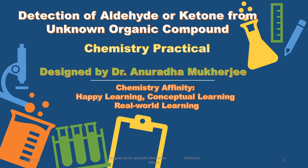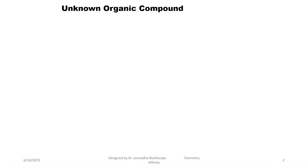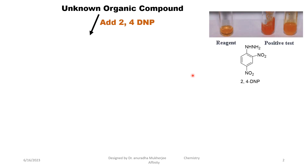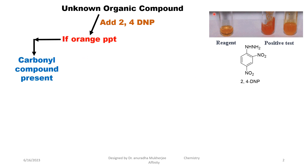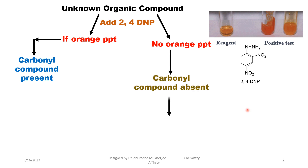Detection of aldehyde or ketone from an unknown organic compound in chemistry practical. First, dissolve the unknown organic compound in a suitable solvent, then add 2,4-DNP. If you are getting an orange precipitate, then it is a carbonyl compound. But if you are not getting any orange precipitate, that means the unknown organic compound does not contain any carbonyl functional group.